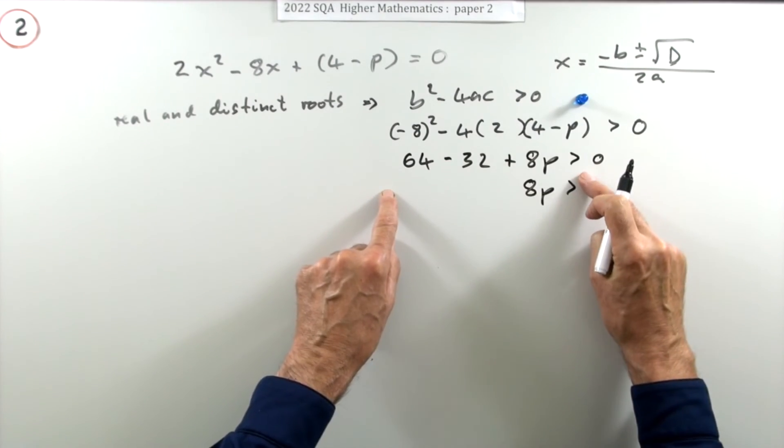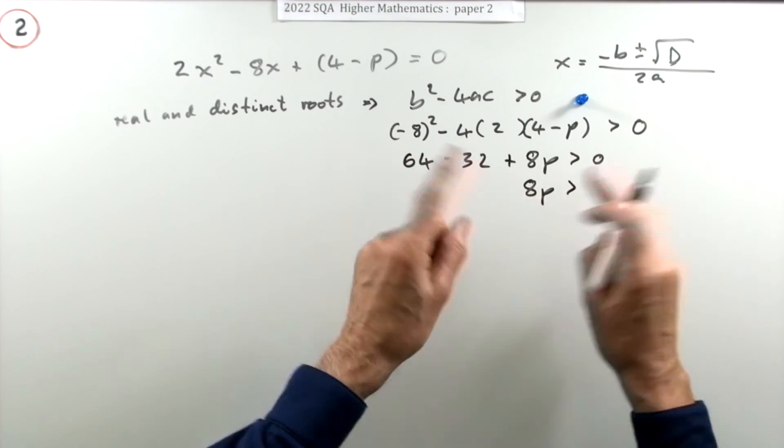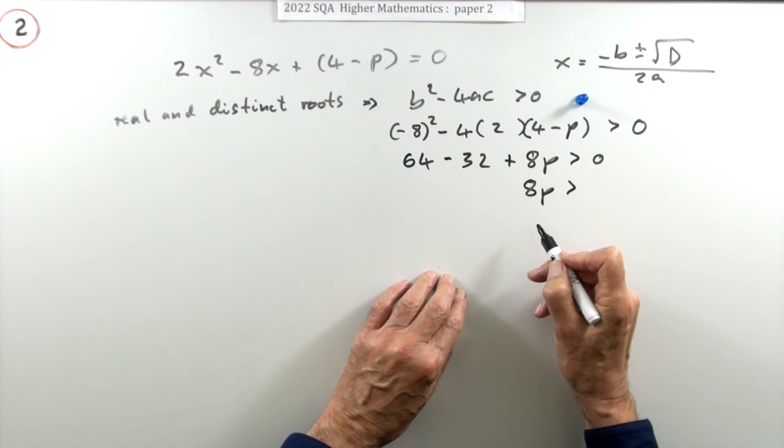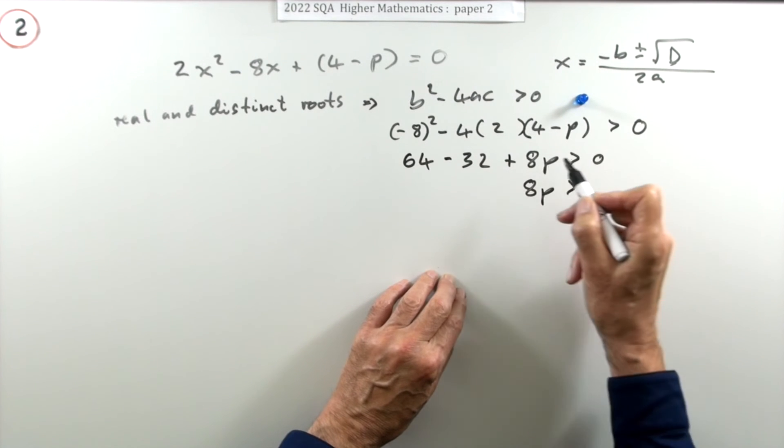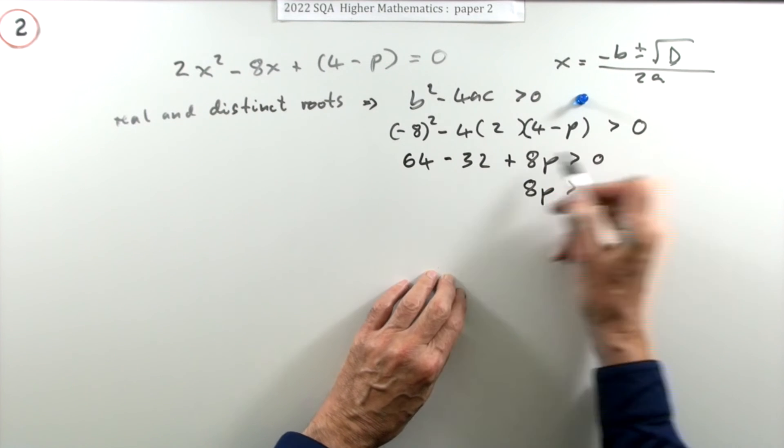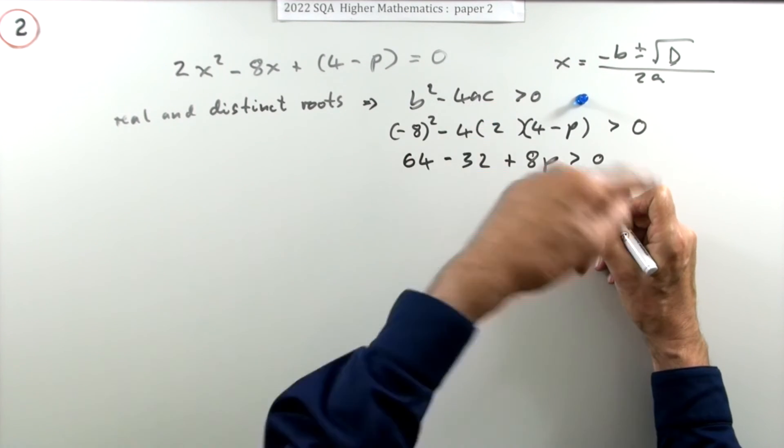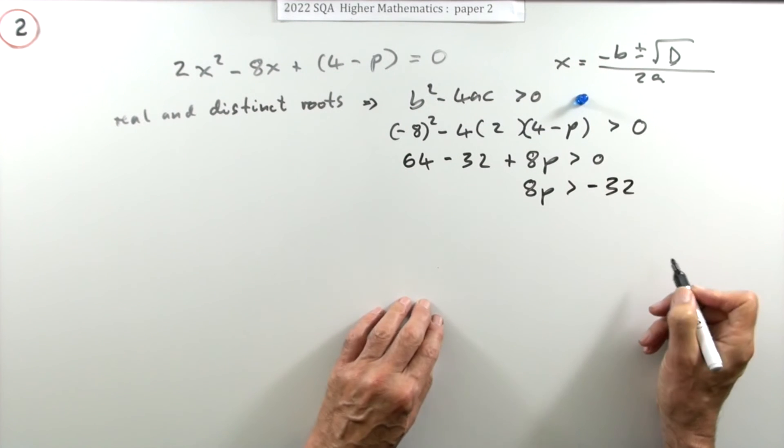With inequations you can quite safely do the same things, swapping sides and so on. The only thing you have to watch is with multiplications and divisions. If you carry out a multiplication or division by a negative number, that would flip the sign. That's not going to happen here.